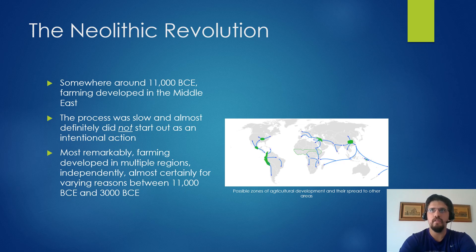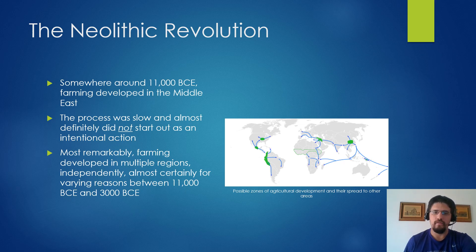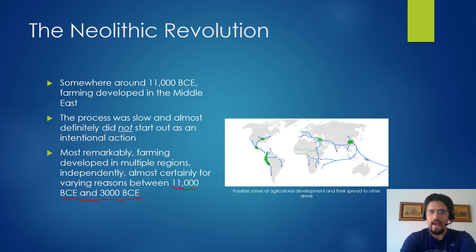The Neolithic Revolution started officially somewhere around 11,000 BCE. A lot of these dates are guesswork — the process is incredibly slow and takes place in multiple places. So there was less one big Neolithic Revolution and more a lot of smaller ones between 11,000 BCE and 3,000 BCE. BCE just stands for 'before the common era' — it's exactly the same as BC, so don't get too twisted up in those dates.